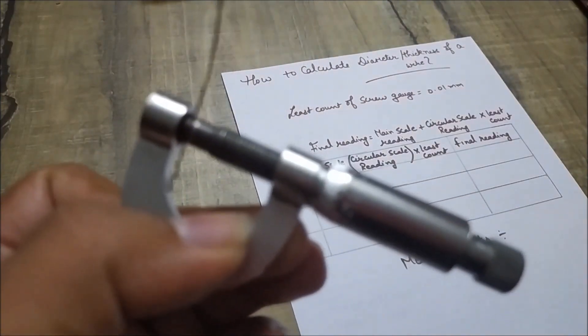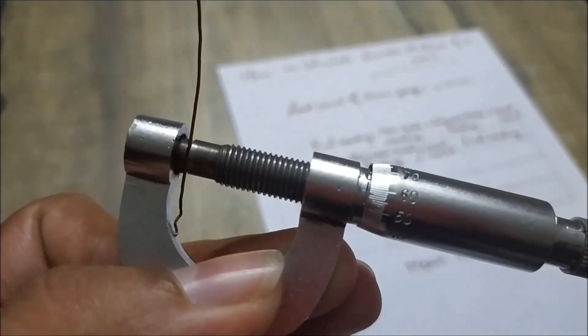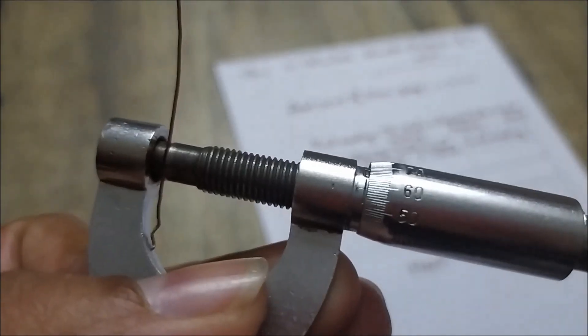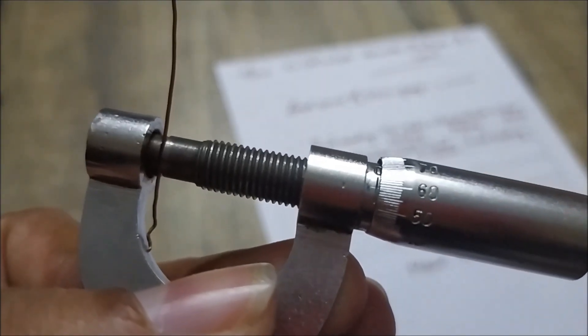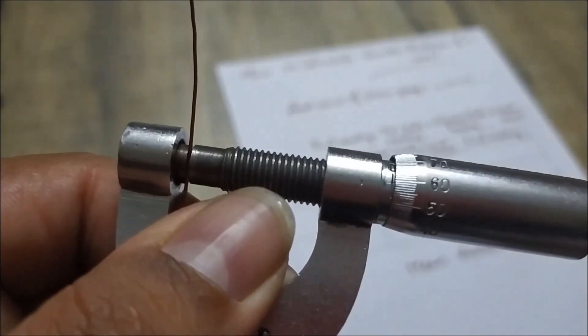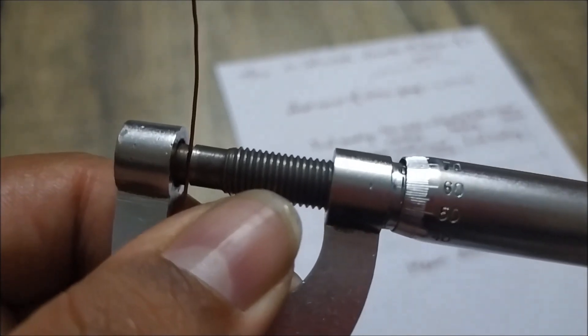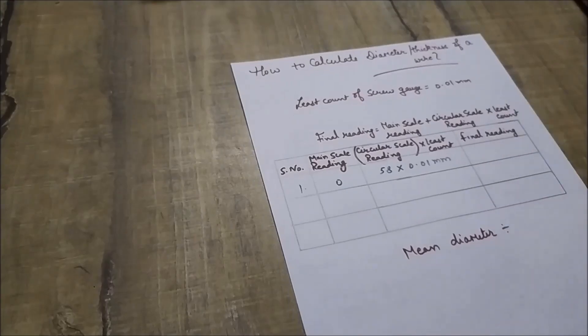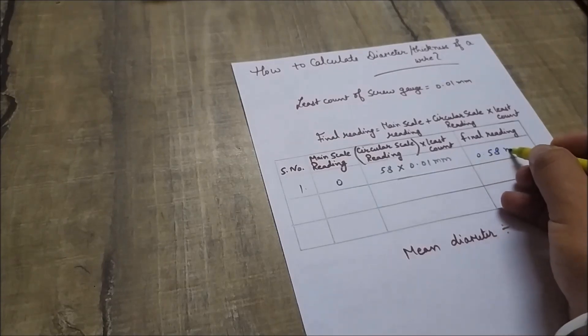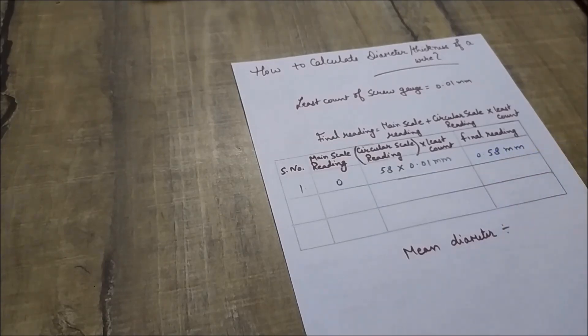Now let's note down the reading on circular scale. Which division of circular scale is coinciding with the baseline of main scale? You can see it is the 58th division on circular scale coinciding with the baseline of main scale. So your circular scale reading is 58 and your least count is 0.01. Now your final reading as per this formula comes out to be 0.58 mm.